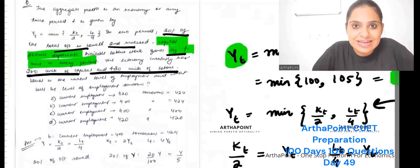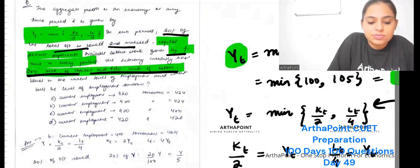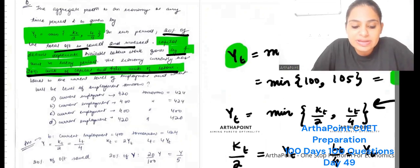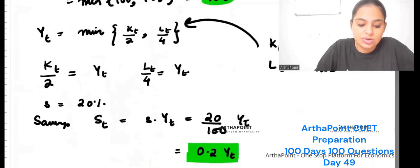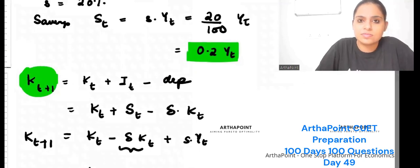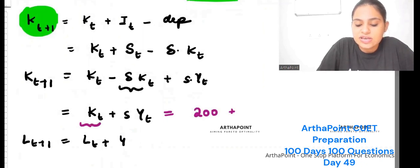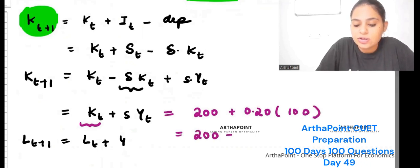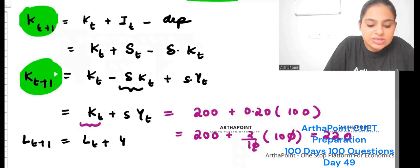Output in period t is 100. So capital in period t+1: K_t was 200, savings rate is 20 percent, and Y_t is 100. Therefore K(t+1) = 200 + 0.2 * 100 = 220. Capital in period t+1 is 220.